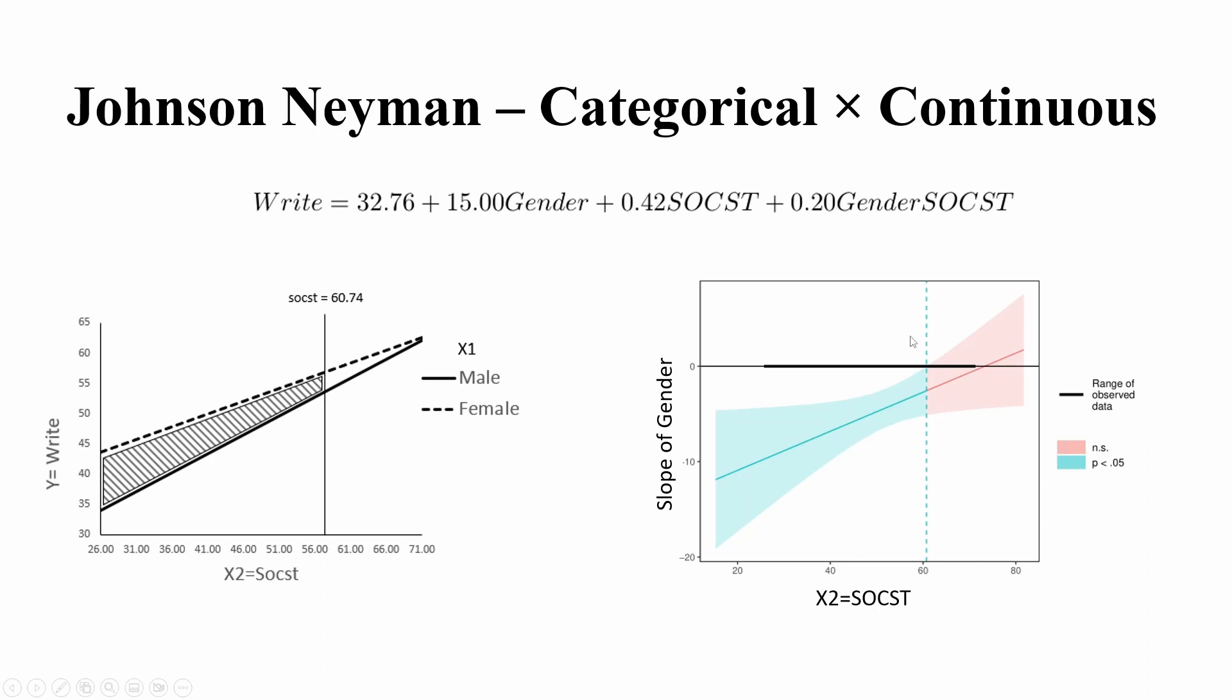In that example this is the final result, the figure. So you can see they're slightly different. What is the major difference is the y-axis. In the Excel example, the y is the original y, the writing score.